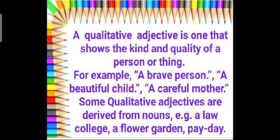Next is the qualitative adjective. The word qualitative has been derived from the word quality, which tells us about or describes a person in a better way. A qualitative adjective is one that shows the kind and the quality of a person or thing. For example: a brave person, a beautiful child, a careful mother. Some qualitative adjectives are derived from nouns, for example: a law college, a flower garden, pay day.